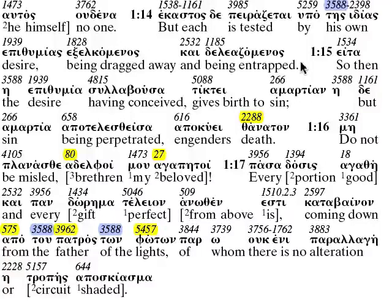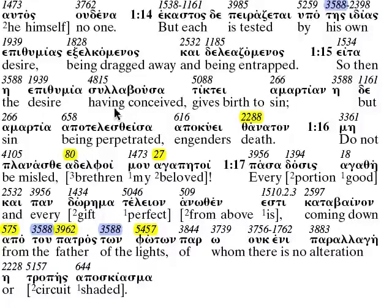1:13 — 'Let no one being tested say that I am tested from God,' for God is beyond testing by evils. That doesn't say he doesn't test — there are many places he does test — but not by evils. God's testing is for us to become unadulterated, but Satan's testing is for us to become adulterated and completely worthless. 1:14 — 'But each is tested by his own desire, being dragged away and being entrapped.' 1:15 — Then the desire, having conceived, gives birth to sin, and sin being perpetrated engenders death — 'thanatos,' thanatology, the study of the dead.